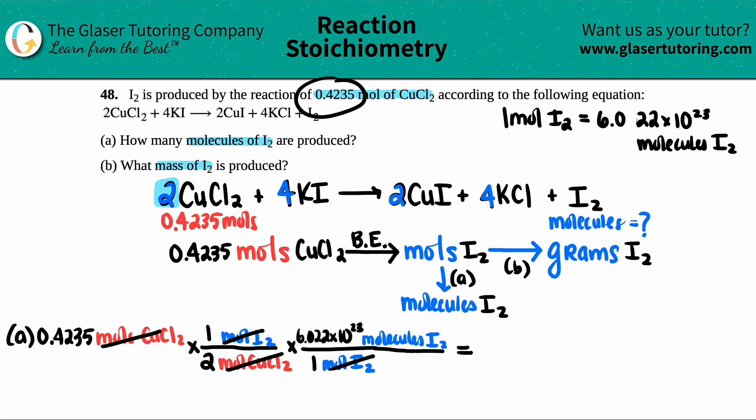Now, since we started with four sig figs, we have to end with four sig figs. The conversion numbers have no weight for significant figures. So if your professor or teacher cared about sig figs, I don't care. But if you started with four, you should end with four. So my answer is 1.275 times 10 to the 23rd. And that's molecules of I₂. So that is the first answer.